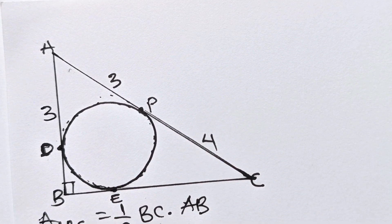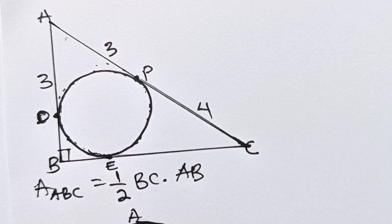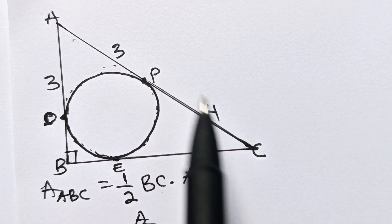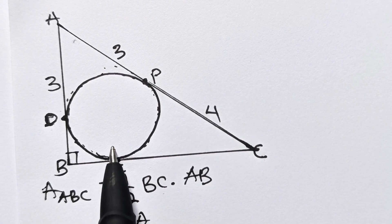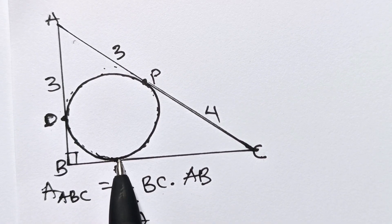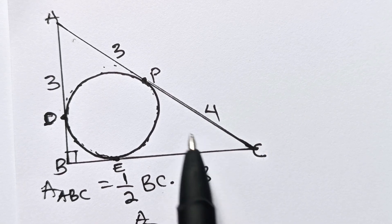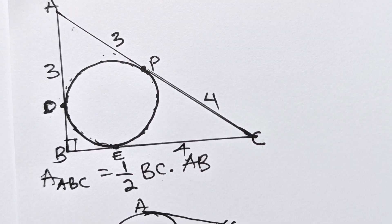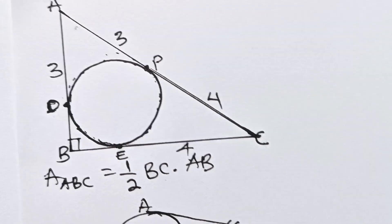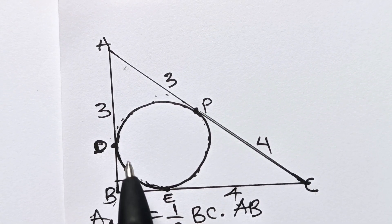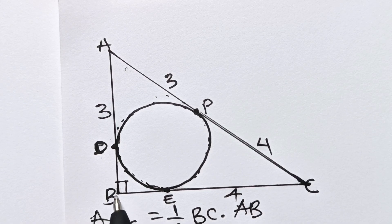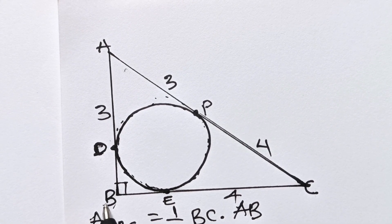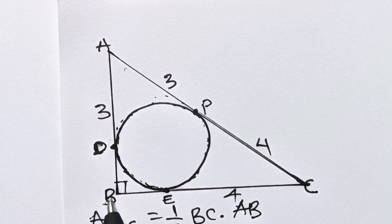So AD is also equal to 3. Now, let us consider PC and EC. PC and EC are tangents to this particular circle at points P and E, and they all meet at point C. So it simply means that PC should be equal to EC, which is equal to 4. Now we can go ahead and look at point B as well.